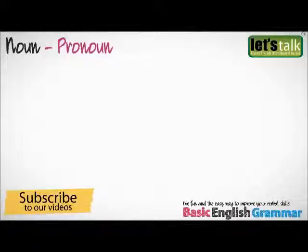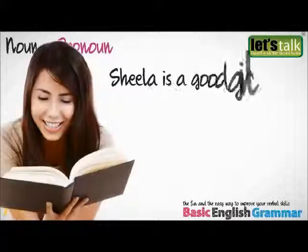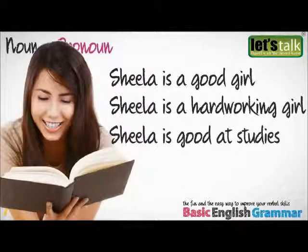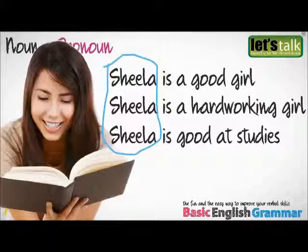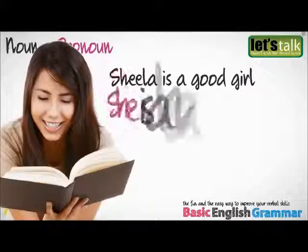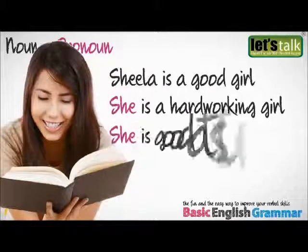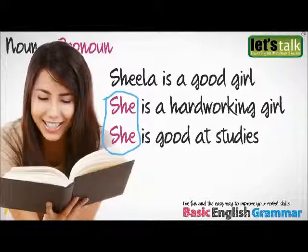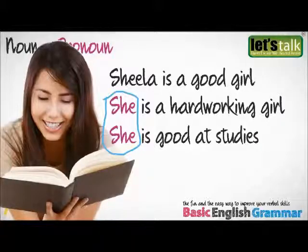Let us now see what a pronoun is. We may say: Sheila is a good girl. Sheila is a hard-working girl. Sheila is good at studies. Here Sheila, a proper noun, is used three times. We can avoid repetition of a noun and instead use a pronoun — she is a good girl, she is a hard-working girl, she is good at studies. In the second and third sentences, Sheila is replaced by the pronoun. Hence, a word that is used instead of a noun is called a pronoun.